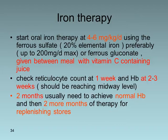Iron therapy should be given at a higher therapeutic dose of 4 to 6 mg/kg/day — mainly as ferrous sulfate, which contains 20% elemental iron, up to a maximum of 200 mg/day. If ferrous sulfate is unavailable, ferrous gluconate can be used. Iron should be given between meals with vitamin C–containing juice. Check the reticulocyte count one week later and hemoglobin two to three weeks later.